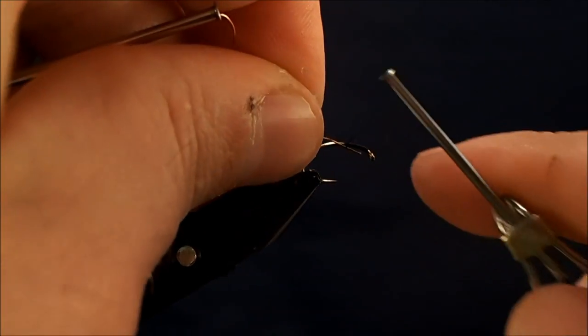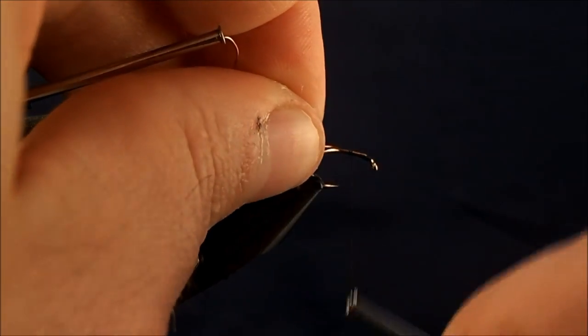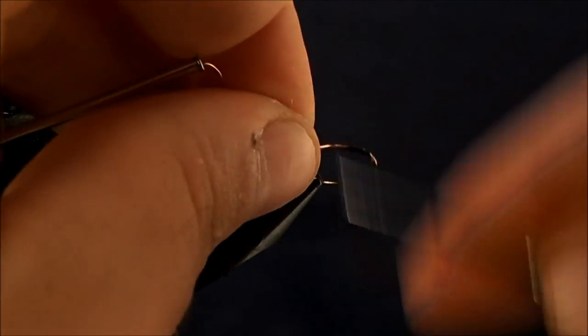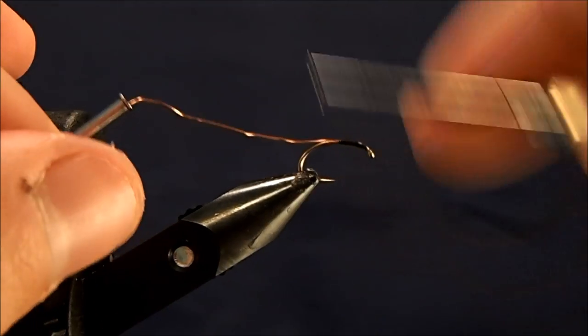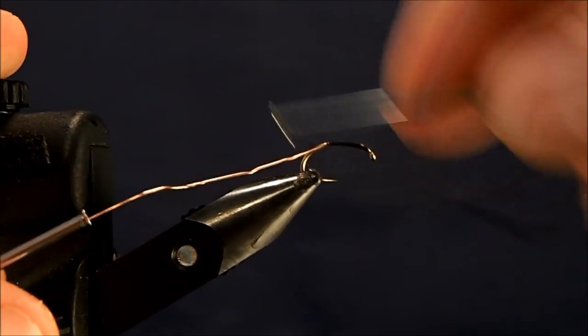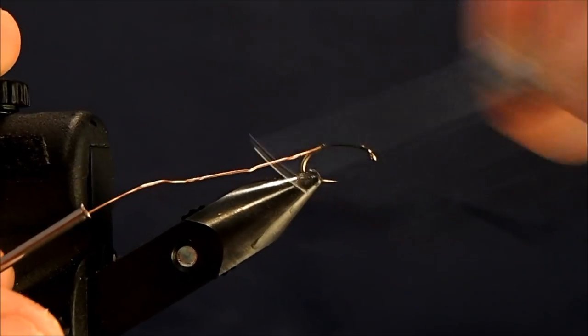I like to use a bobbin when I tie my wired body flies. So I'll just start to follow the contour of that hook all the way down past the bend.